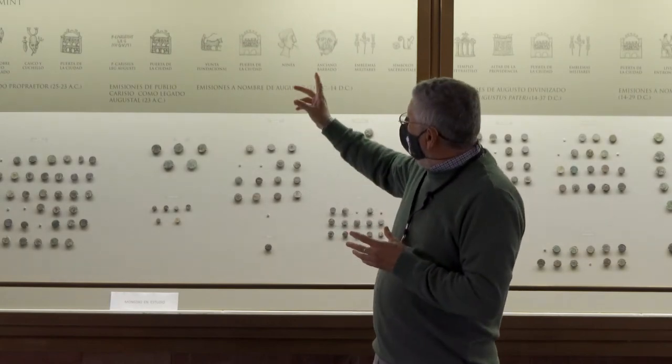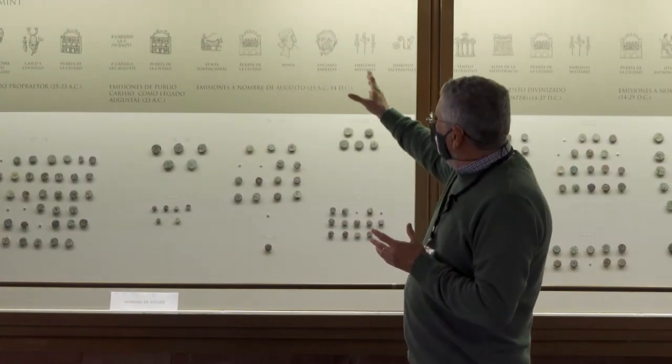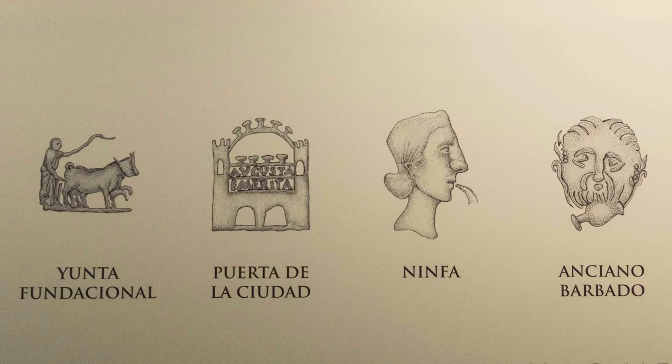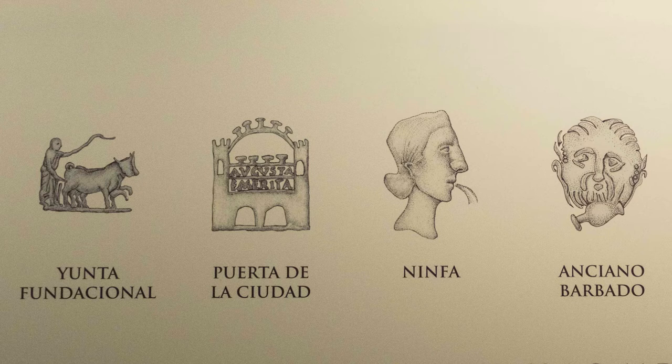Las primeras que están aquí tienen unos motivos fundacionales muy bonitos. Está la yunta con el sacerdote trazando el pomerium de la ciudad, el territorio sagrado donde se está fundando la ciudad. Y también unas divinidades acuáticas, una ninfa o el anciano barbado que se ha identificado con el Anas. Son motivos dedicados a las divinidades del territorio y a las obras públicas que se están haciendo en ese momento para el funcionamiento de la ciudad. Son unos modelos muy propagandísticos.